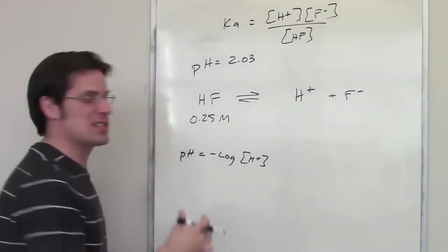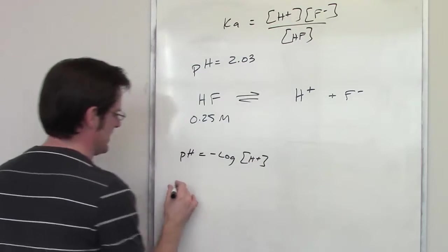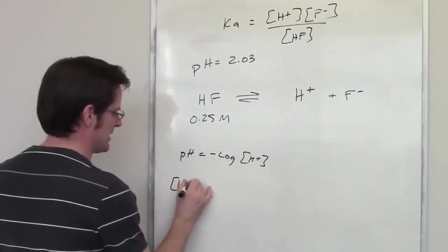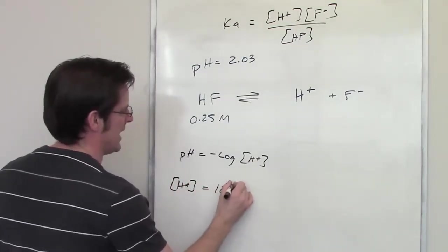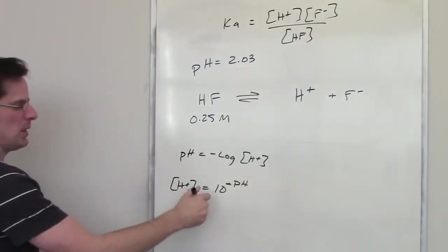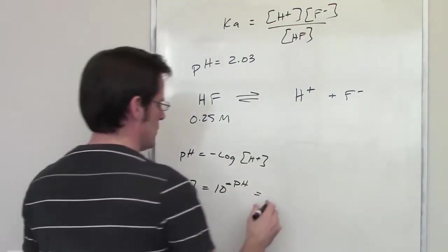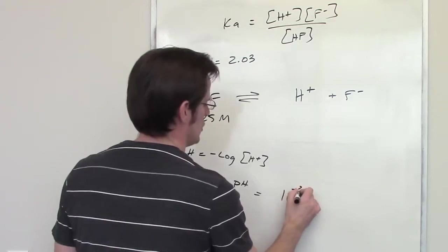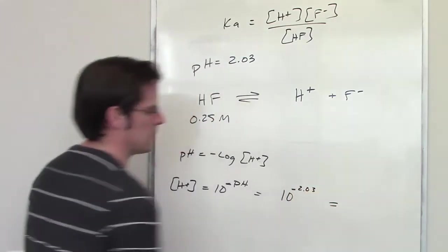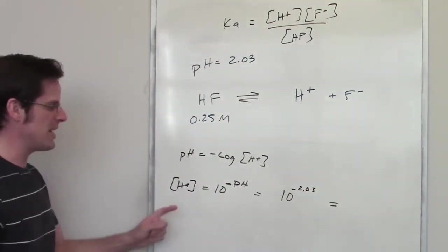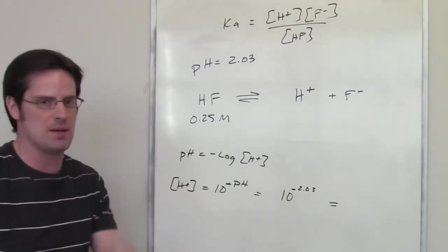But you don't really have to do that because there's already an equation that I've given you elsewhere that says the concentration of H+ is equal to 10 raised to the negative pH. In other words, the concentration of H+ is going to be equal to 10 raised to the negative 2.03 at equilibrium. I throw that in my calculator.